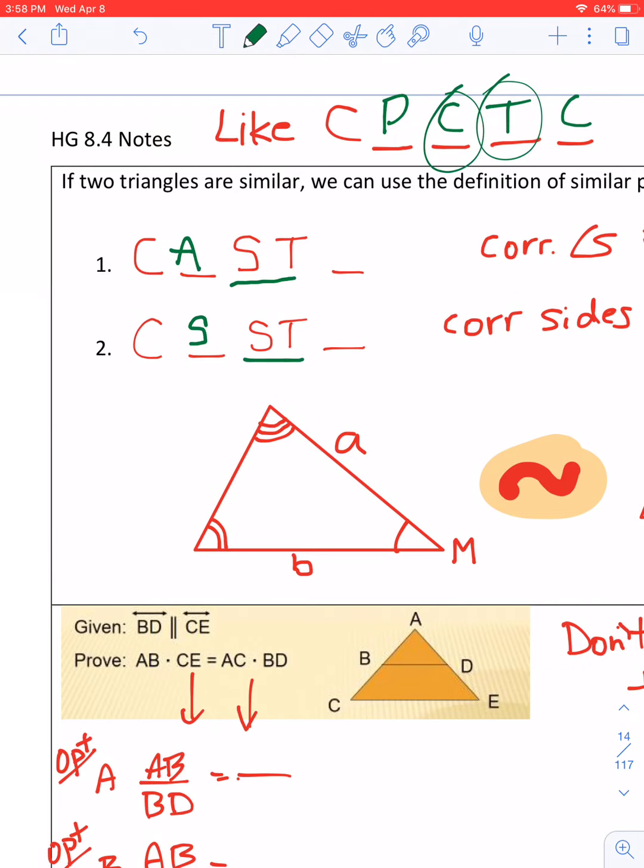Then we have CA and CS. Again, the A stands for angles, and this stands for sides. Now you don't have to use these abbreviations that I'm using, but feel free. So the corresponding angles of similar triangles are congruent, and the corresponding sides of similar triangles are not congruent, but rather proportional.